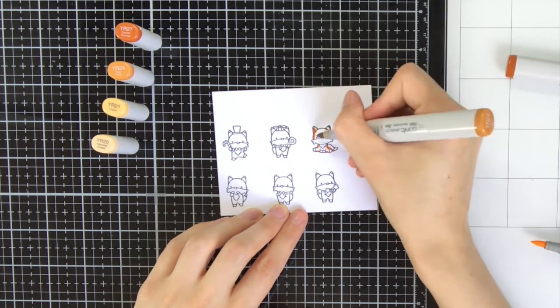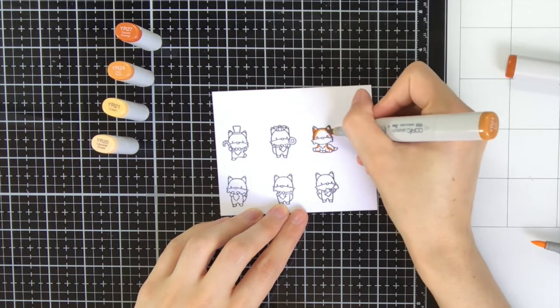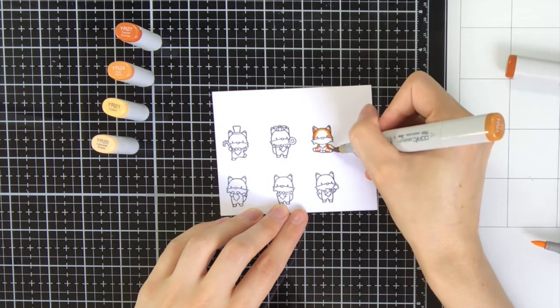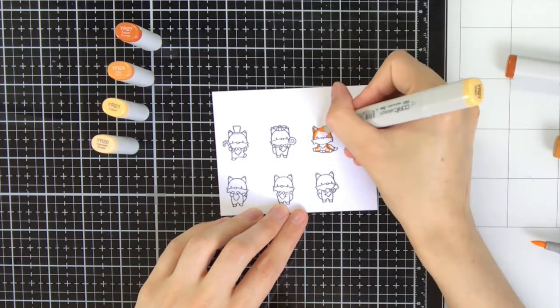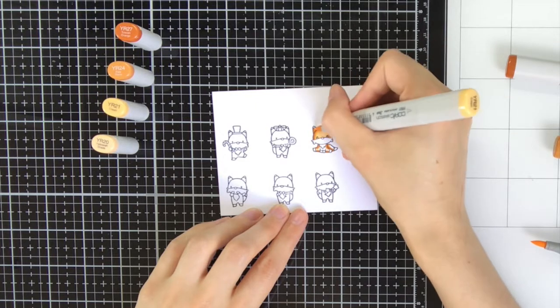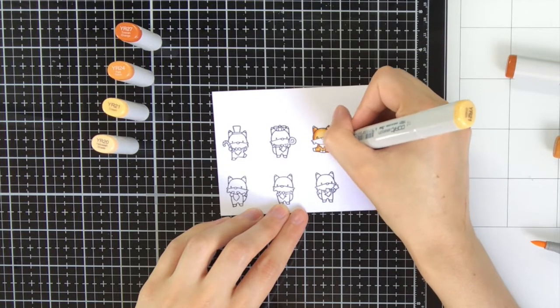As I'm doing copic coloring I'm using copic friendly paper and copic friendly ink. So I'm using Memento Tuxedo Black ink on perfect coloring paper.